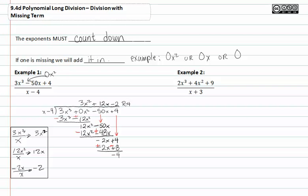Moving on to example two, first let's look at the exponents to see if they're in descending order. They are indeed descending, but they don't count down. We are missing an x to the first right here. So when we rewrite it as a long division problem, we'll need to add in a zero x.